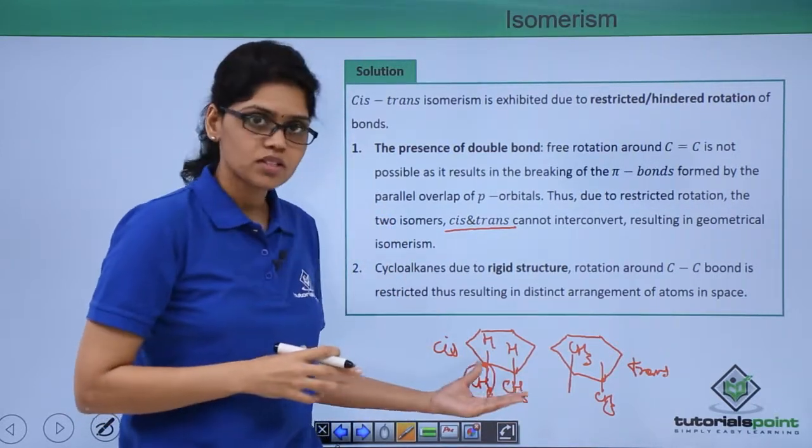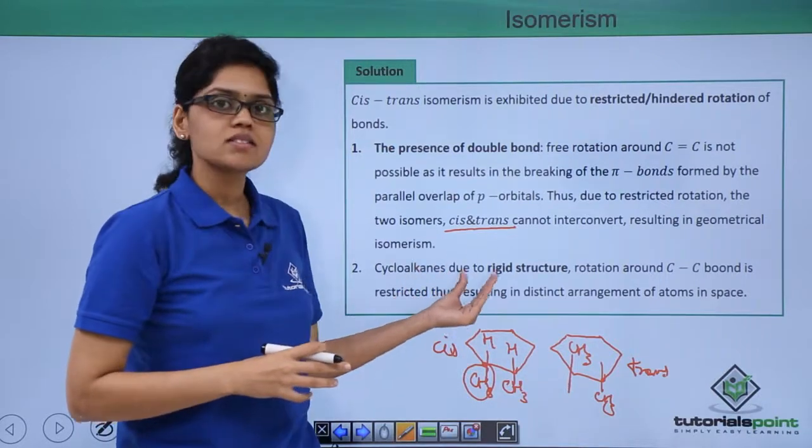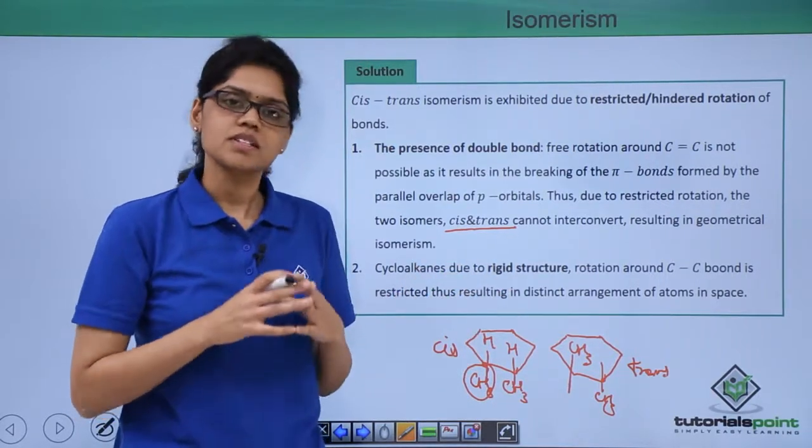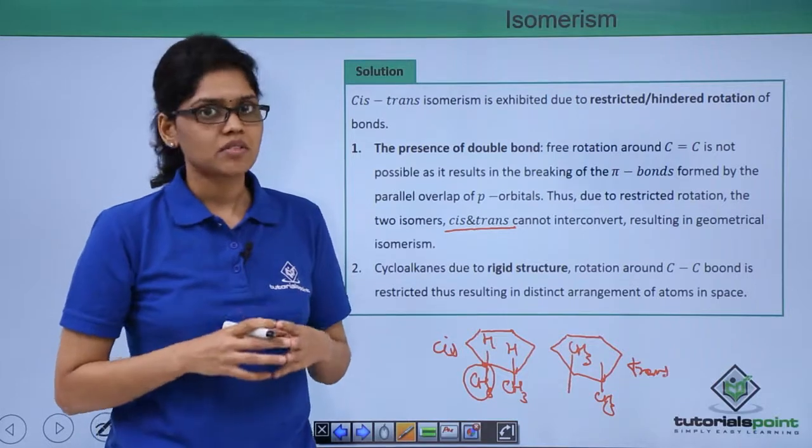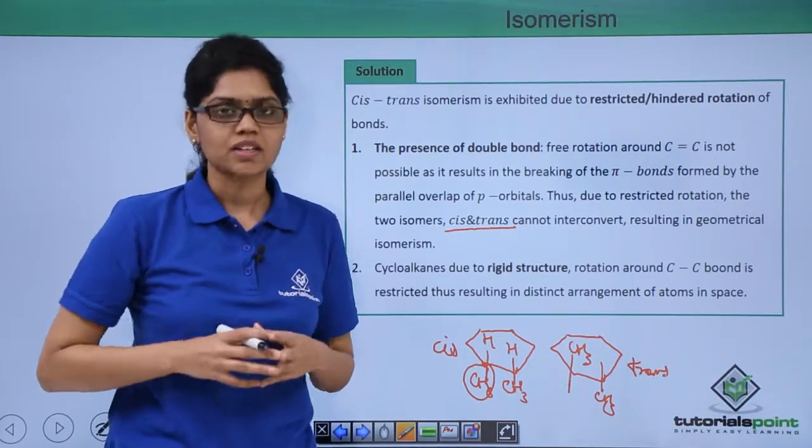Due to hindered rotation, even cyclohexane exhibits cis-trans isomerism for the same reason. I hope you are very clear on the concept that we have discussed in this question. Thank you.